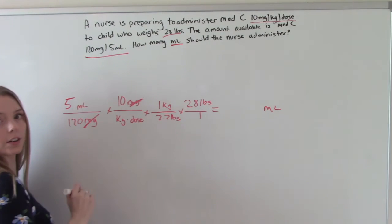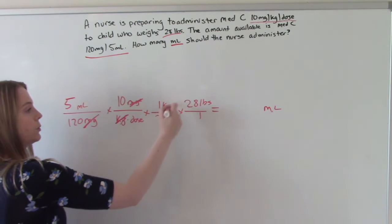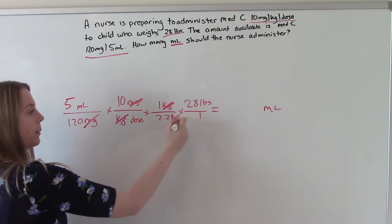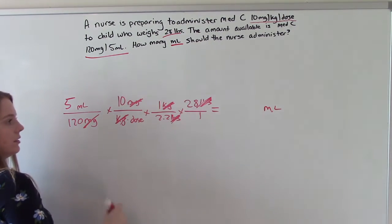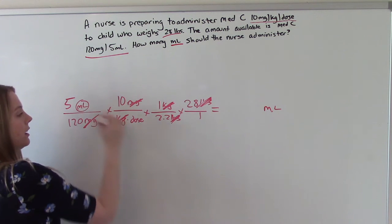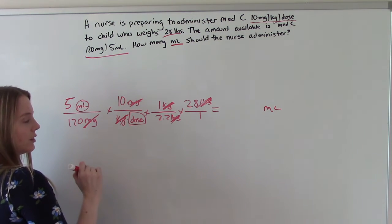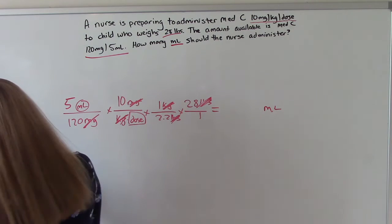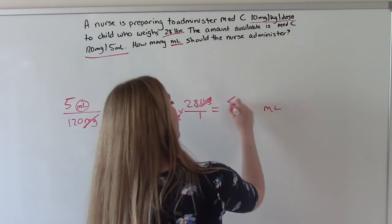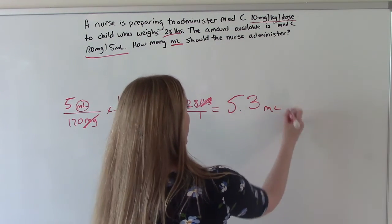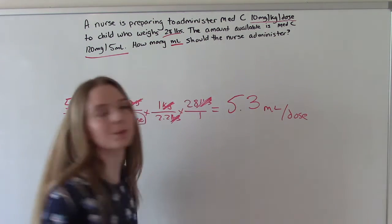Now we can start cancelling things out. So milligrams will cancel, kilograms will cancel, and our pounds will cancel. That leaves us with mLs per dose. So you punch it in, do the math, and you get 5.3 mLs per dose.